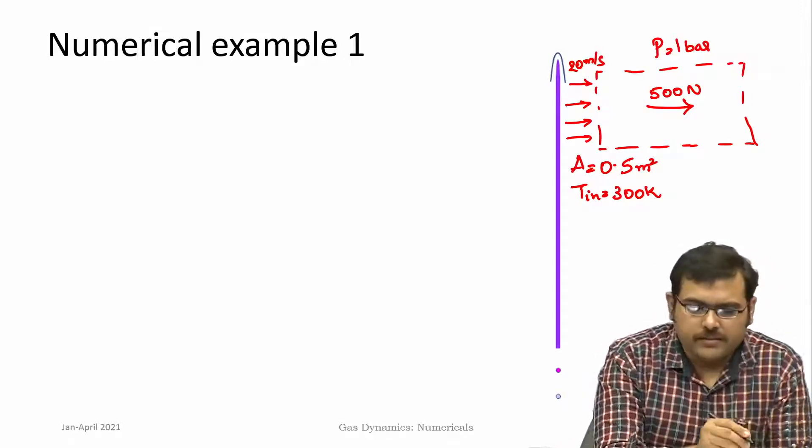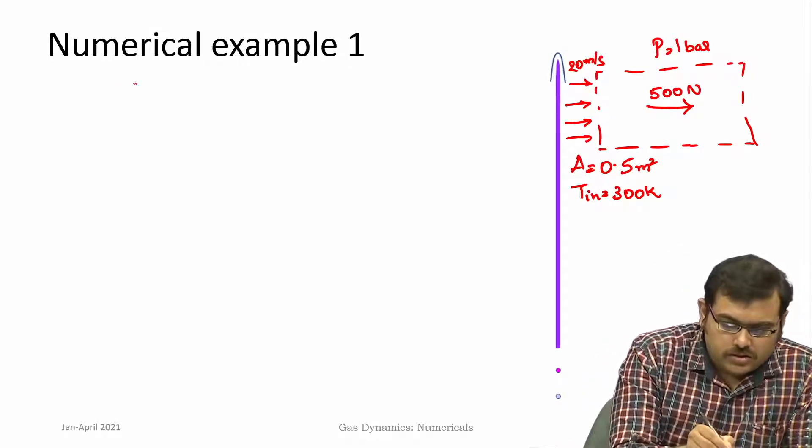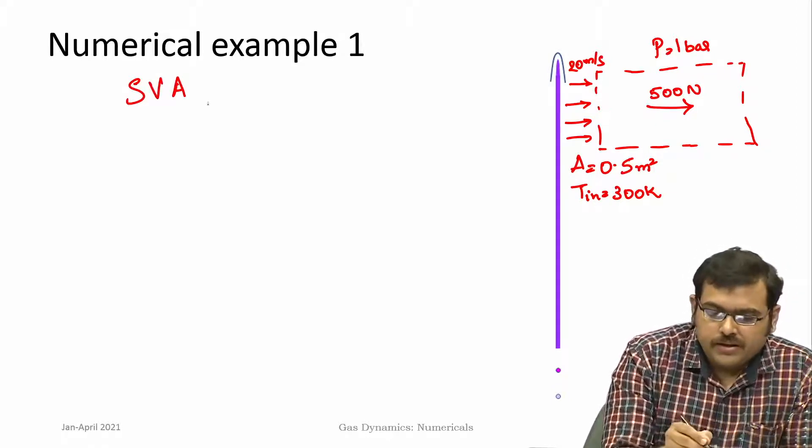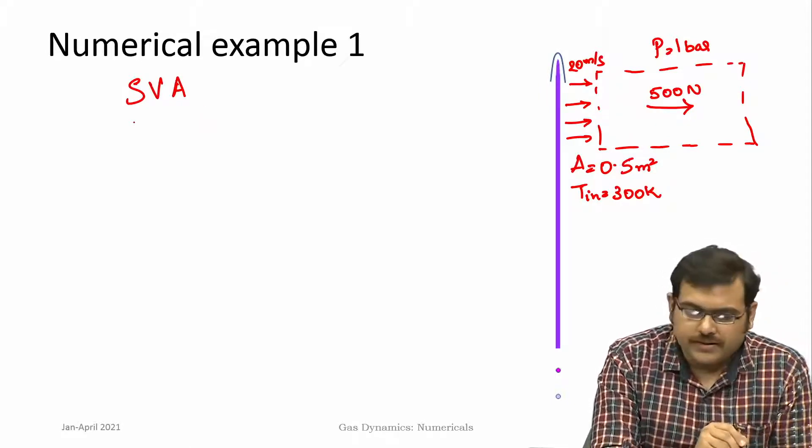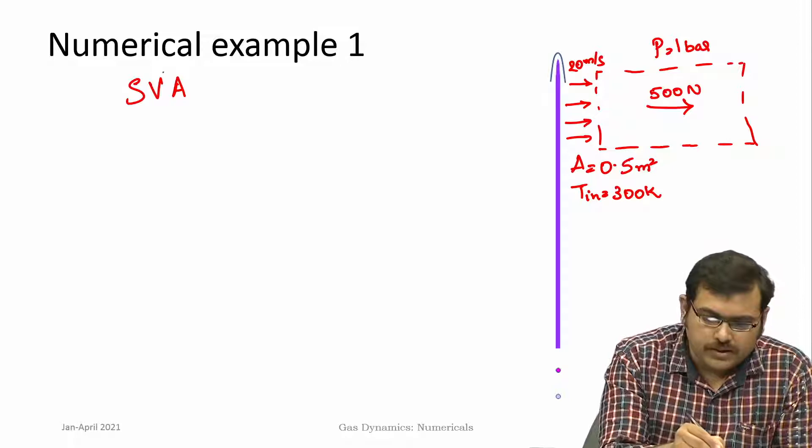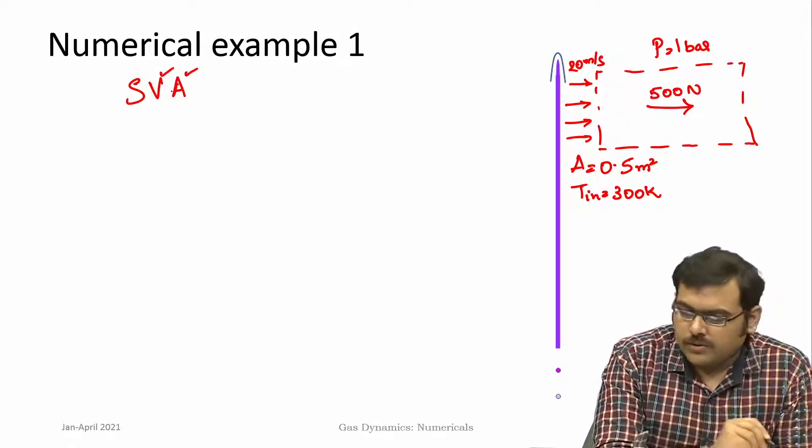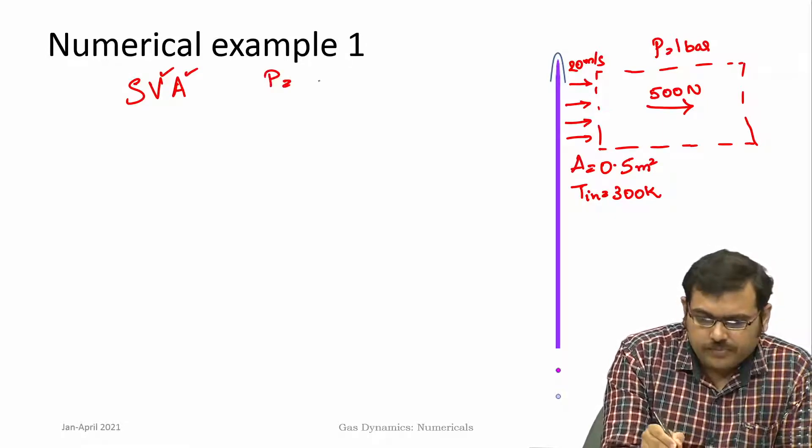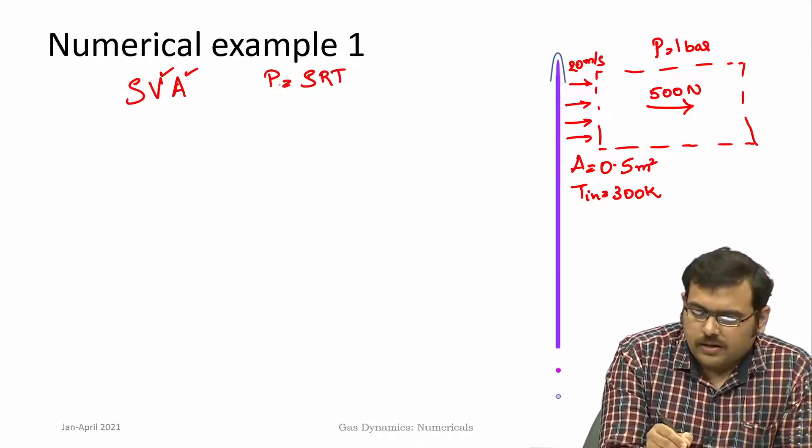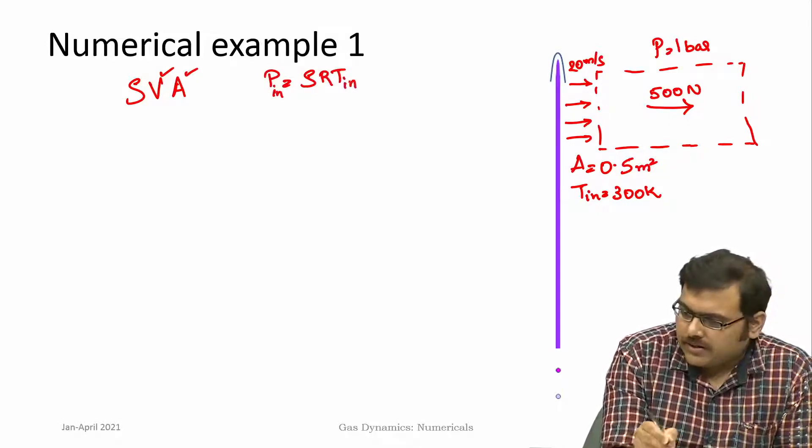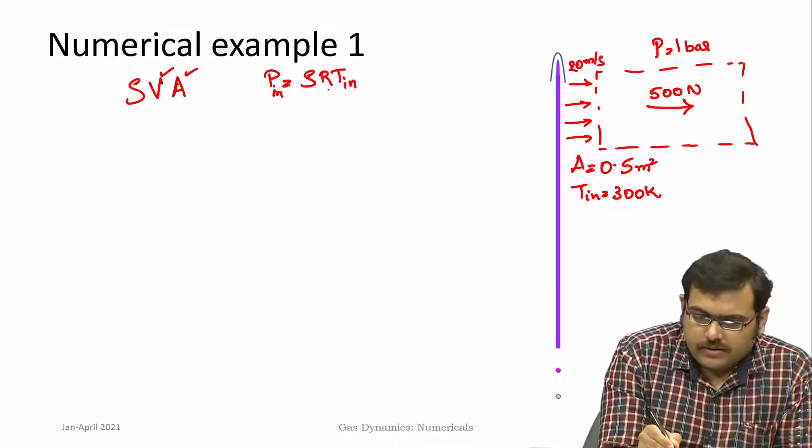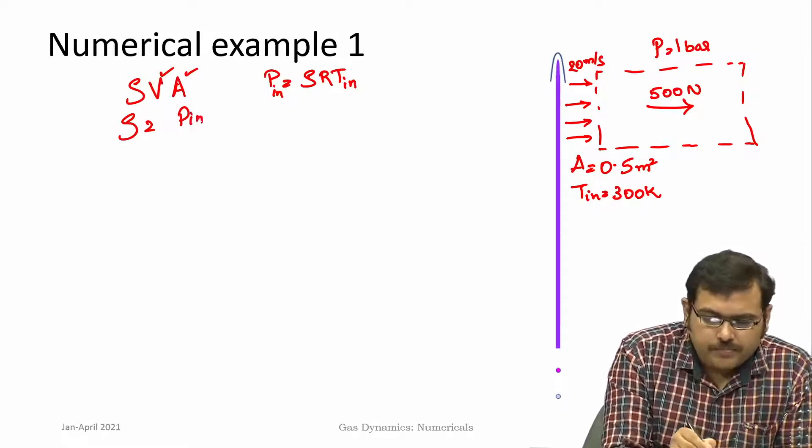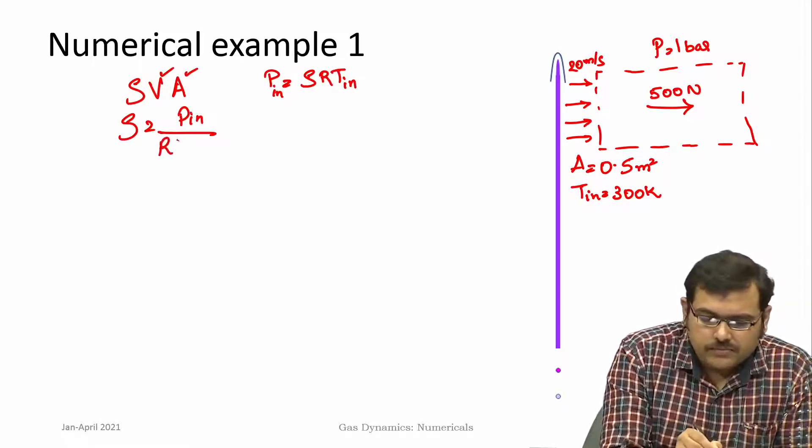First is what is the mass flow rate. Mass flow rate is rho v A, that is density, velocity and area. Here at the inlet, we know velocity is known, area is known, but we do not know density. But density can be found using p equals rho R T. Pressure at inlet is known, temperature at inlet is known and R is known.